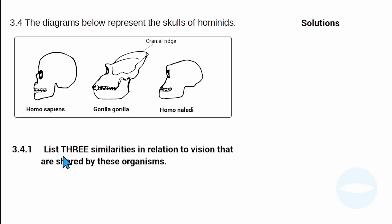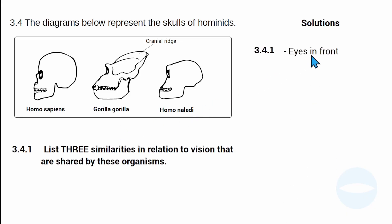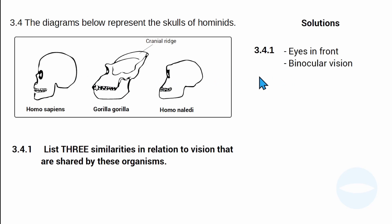The first question asks: list three similarities in relation to vision shared by these organisms. First, the eyes are in front — as you can see, all three organisms have forward-facing eyes. Second, they have binocular vision, meaning they have two eyes working together. This also allows them to see objects in three dimensions.